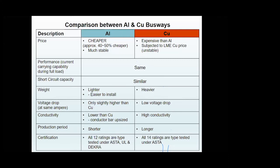The short circuit capacity of aluminum and copper busway are almost similar. Aluminum has another advantage in weight — it's a lighter material, making it easier to handle and install on site. Voltage drop for aluminum is only slightly higher than copper. Lead time for aluminum is shorter than for copper busway. In terms of certification, both our aluminum and copper busway are type-tested and certified by third parties.